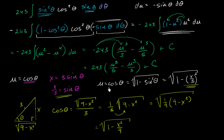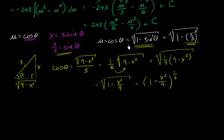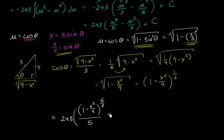Either way you get the same result. I find using the trig identity to express cosine theta in terms of sine theta and then substituting to be a little more straightforward. Now we substitute into the original expression: u equals 1 minus x squared over 9, raised to the one-half power. So our final answer in terms of x is 243 times (1 minus x squared over 9) to the five-halves power, divided by 5, minus (1 minus x squared over 9) to the three-halves power, divided by 3, plus C.